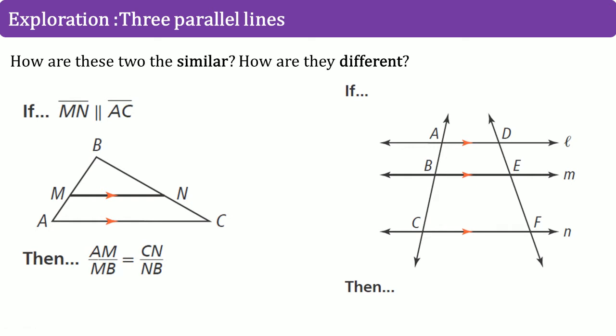Let's start with the exploration. How are these similar and how are they different? On the left hand side, you see the theorem from Part 1. That's given lines that are parallel on a triangle. We saw that their sides are proportional. AM divided by MB is equal to CN divided by NB.